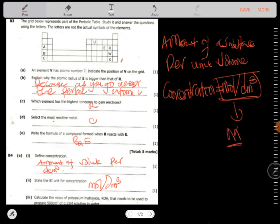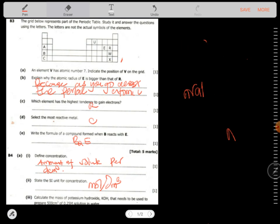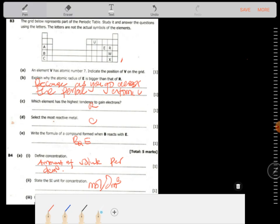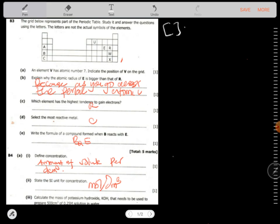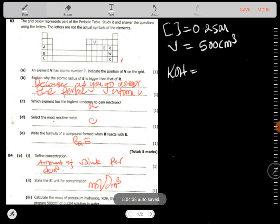Calculate the mass of potassium hydroxide that needs to be used to prepare 50 cubic centimeters of 0.02 molar of a solution. So what we have here, let's write down what we have. We have concentration of 0.25 molar, otherwise we have volume of 500 cubic centimeters. We also have, that's what we have, we are talking of potassium hydroxide, whose relative molecular mass, when you know how to calculate the relative molecular mass, would be potassium is 39 plus 16 plus 1. So the relative molecular mass is 56 grams per mole.